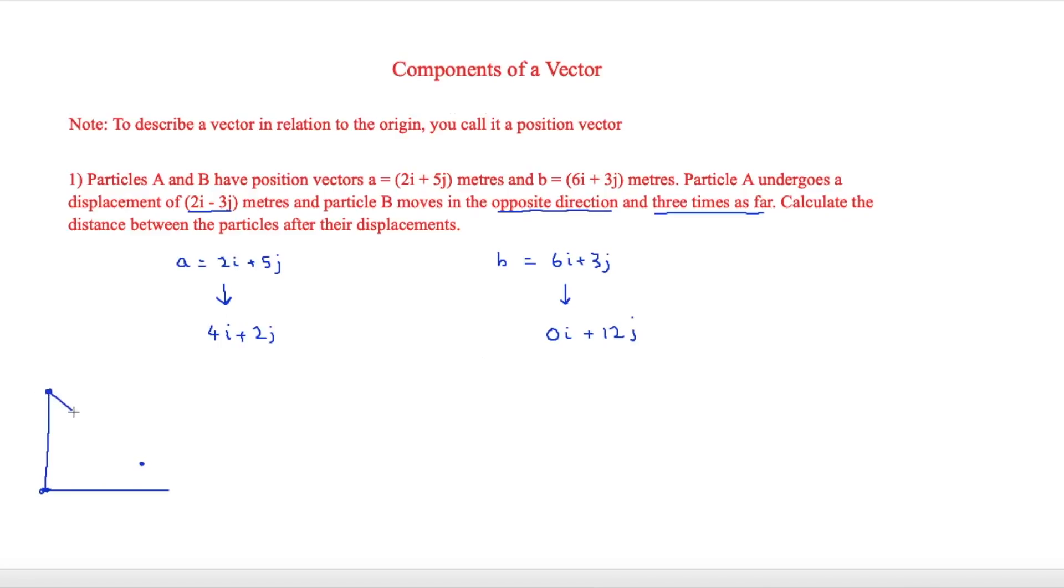And this is the distance that we're trying to find between them. And in order to do this, we're going to have to use a bit of Pythagoras' theorem by working out what that is there, what the x, and then the y there. In order to do this, to get the x value there, we're going to do the 4 minus 0.